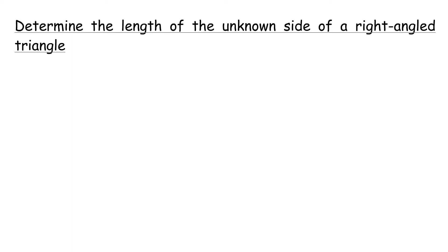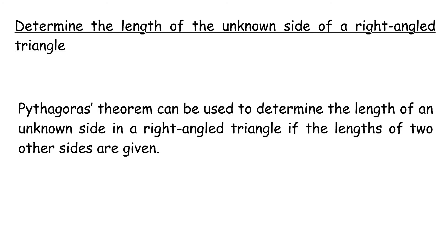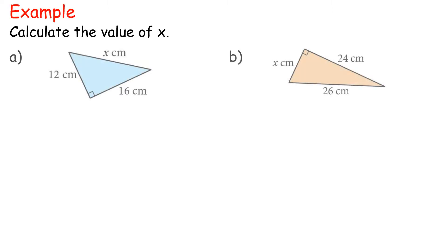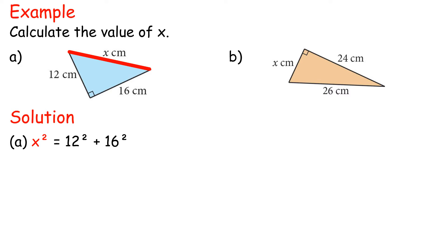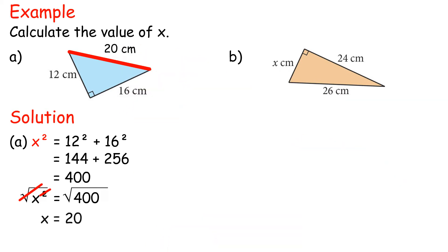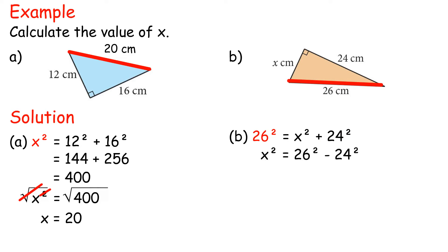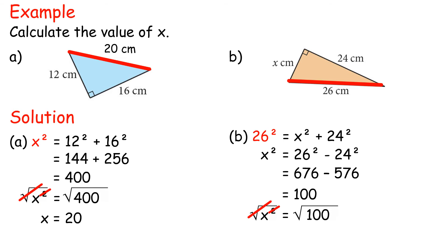Determine the length of the unknown side of a right-angled triangle. The Pythagoras Theorem can be used to determine the length of an unknown side in a right-angled triangle if the lengths of the other two sides are given. Example: calculate the value of x. x² = 26² − 24² = 676 − 576 = 100. x = √100 = 10.